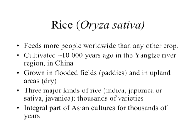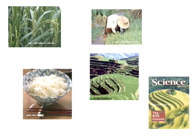Let's start with rice. Rice feeds more people worldwide than any other crop. It was cultivated from about 10,000 years ago in the Yangtze River region of China. Rice is grown in flooded fields or paddies, but also in upland or dry regions as well. Rice has been an integral part of Asian cultures for thousands of years. It is and was considered a sacred symbol and a symbol of fertility — that's why you often see it thrown at weddings. It was unknown in the West until about 320 B.C.